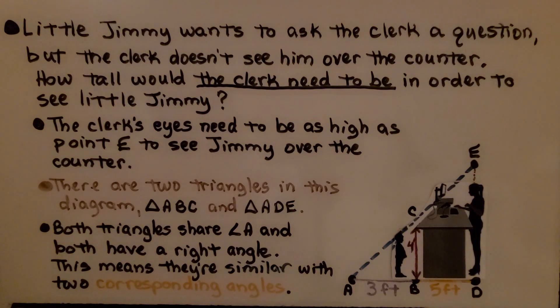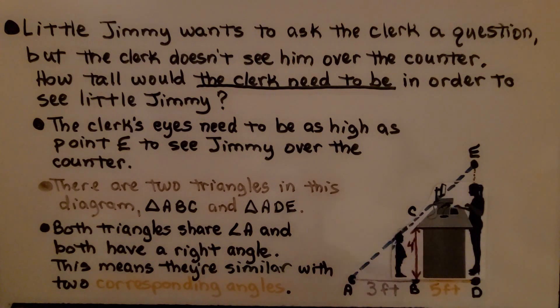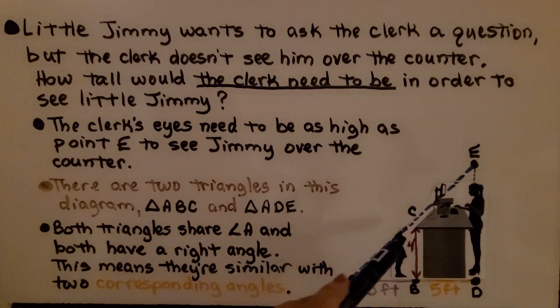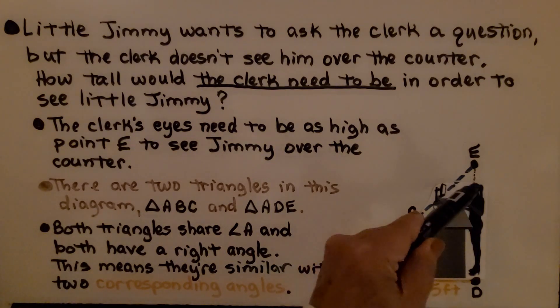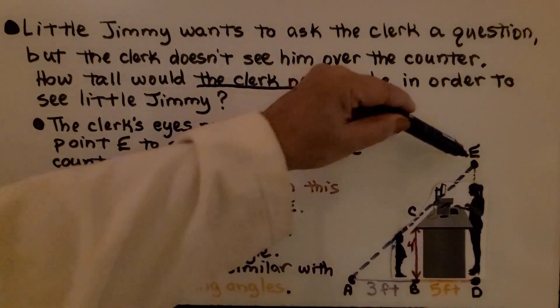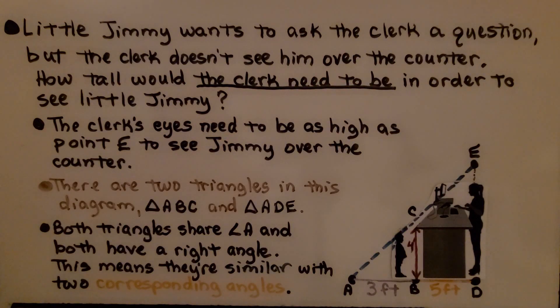So before we begin, let's take a look at this diagram. We have a woman here that's working as a clerk. We have a little child here, and she can't see him over the counter. Little Jimmy wants to ask the clerk a question, but the clerk doesn't see him over the counter. How tall would this clerk need to be in order to see little Jimmy? If she was as tall as point E, she would see him. The clerk's eyes need to be as high as point E to see Jimmy over the counter.